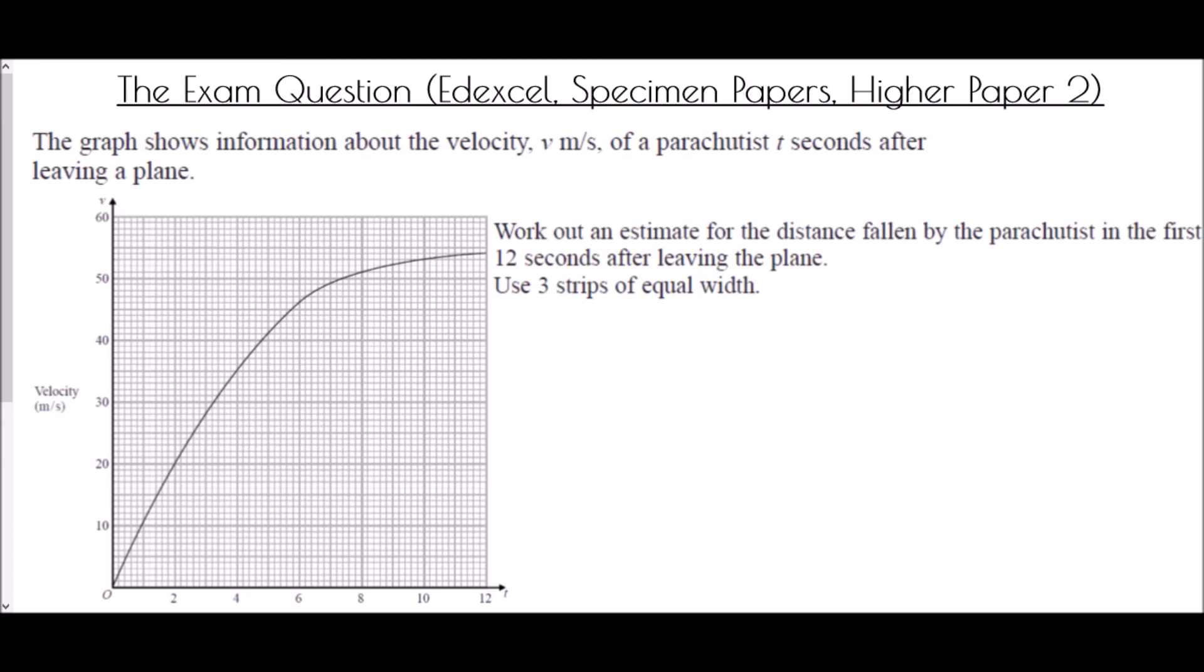And so we end with the exam question. And it came from the Edexcel specimen papers, higher paper 2. And we've got the velocity in v metres per second of a parachutist t seconds after leaving a plane. And we've been asked to work out an estimate for the distance fallen by the parachutist in the first 12 seconds after leaving the plane. This time, use 3 strips of equal width. So because this is 12 seconds and we want 3 strips of equal width, that's telling us we need to draw a line at 4 seconds and a line at 8 seconds.